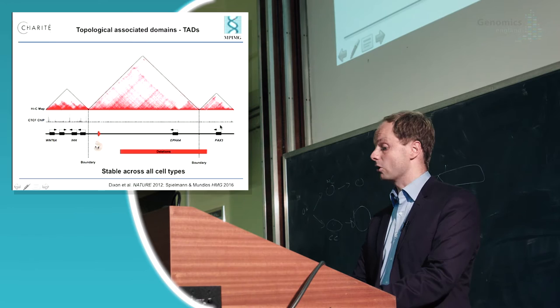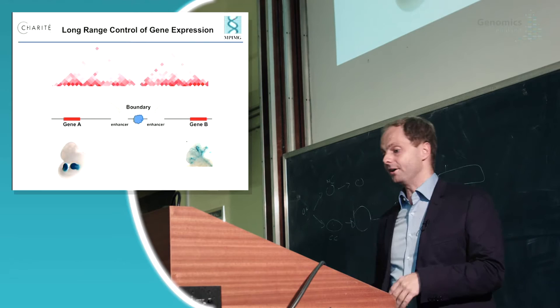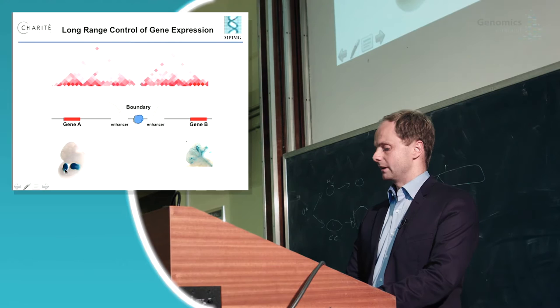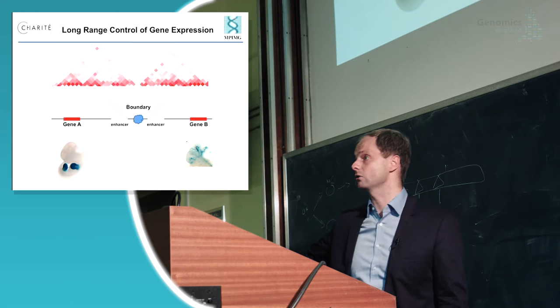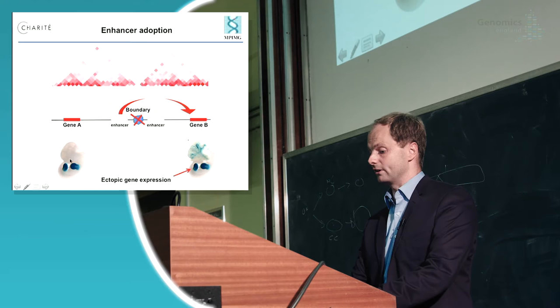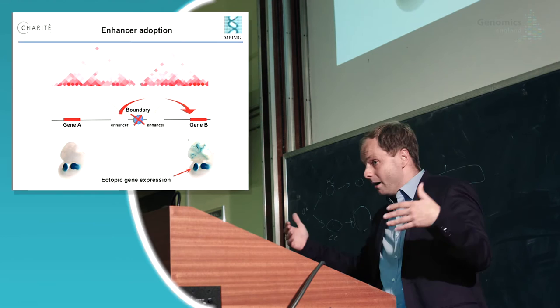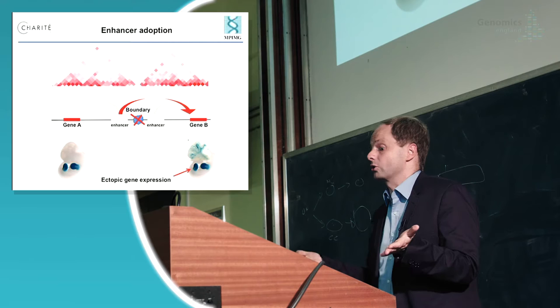We went back to our old array data. If a topological associated domain boundary is disrupted, you'd have a gene regulated by a limb enhancer in one domain, and in a neighboring domain separated by this boundary, a gene expressed only in the vascular system. What would happen if a deletion disrupts this boundary? We hypothesized that this causes enhancer adoption — this enhancer would suddenly hijack the neighboring gene and cause expression not only in the brain but also in the limb. We called it enhancer adoption; others have called it enhancer hijacking. The idea is that something comes together that doesn't belong together — in cytogenetics, people would always have called it position effects.